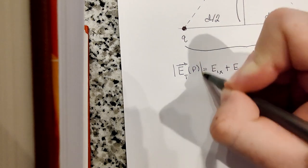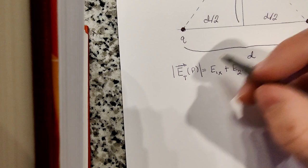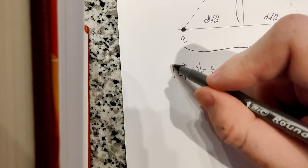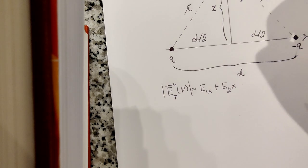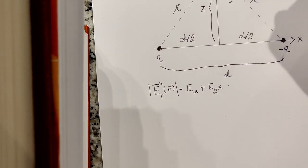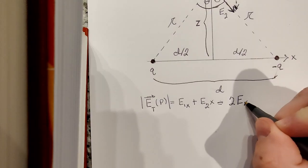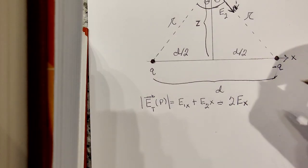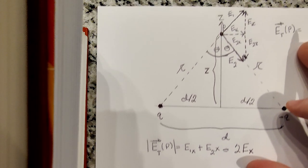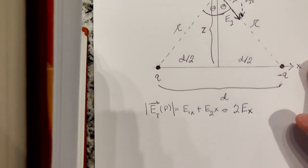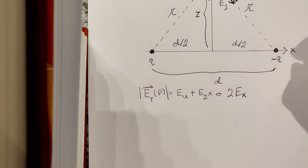And if we just want to consider the magnitudes of each field, for now I'm going to denote the magnitudes. I know I draw the absolute value sign, but if I don't draw a vector symbol over it, just take that as the magnitude. So if you want to know the magnitude, well, we just add the two x-components of each field. It would just be 2Ex, where Ex is the x-component of one of the fields.